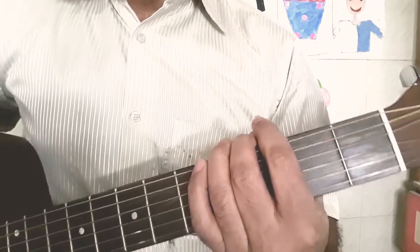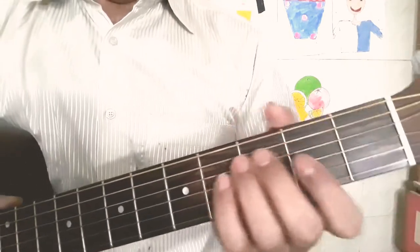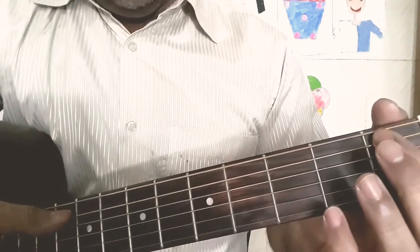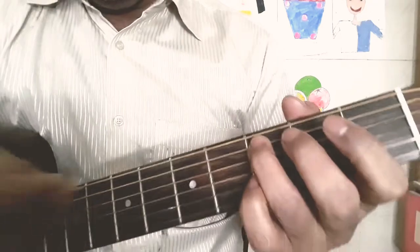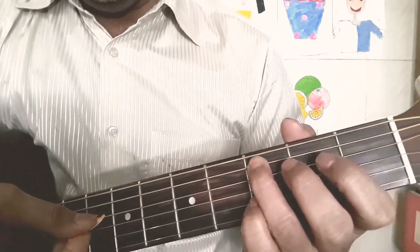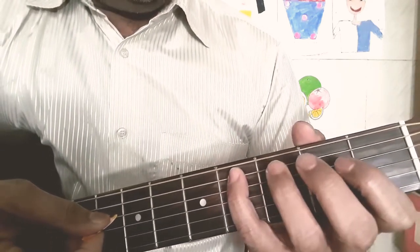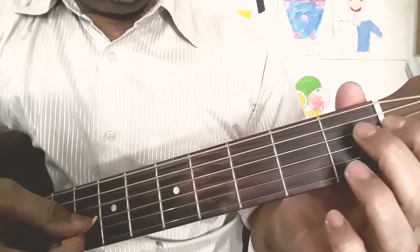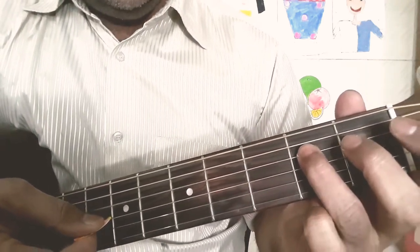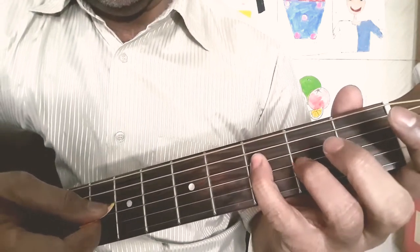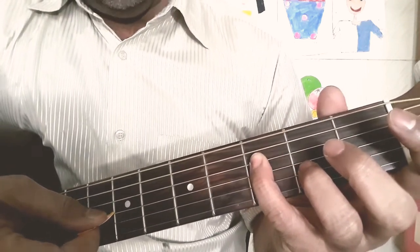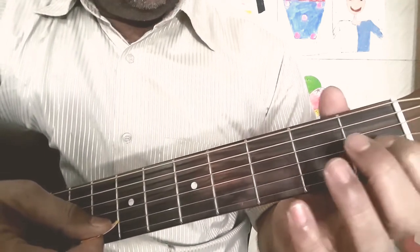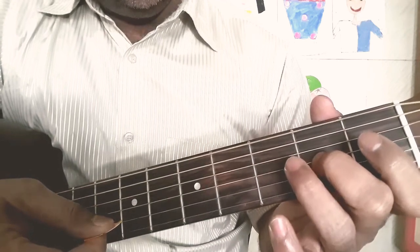I have explained about the full note and half note. Let us proceed with the major scale of note C right. So, our C starts from here. If you see this is A Bb B C right. So, this is C. Full note from here 1 2 that is D full note from here E half note from here F. Again full note from here, again full note from here that is here G, full note from here A, full note from here.